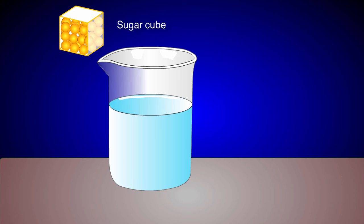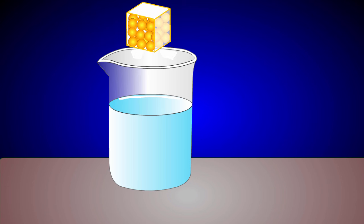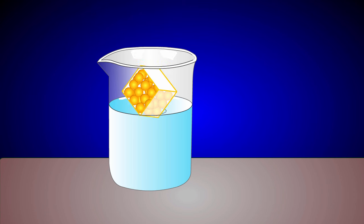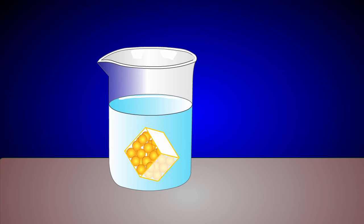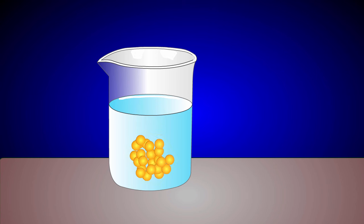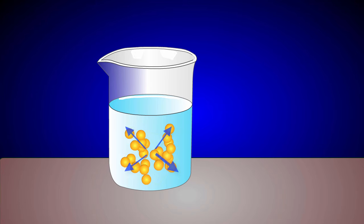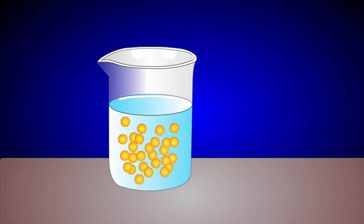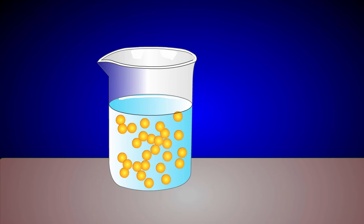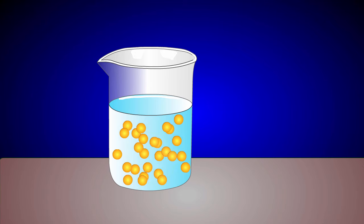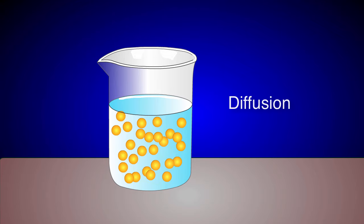Let's use this sugar cube and beaker of water as an example. When the sugar cube is dropped into water, it begins to dissolve. The sugar molecules in the cube move from an area of high concentration to areas of lower concentration until the molecules are evenly distributed. This type of motion is known as diffusion.